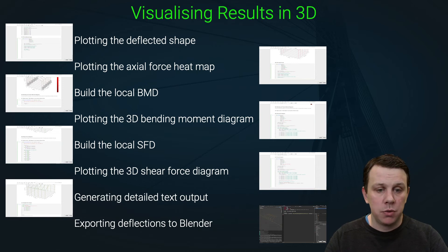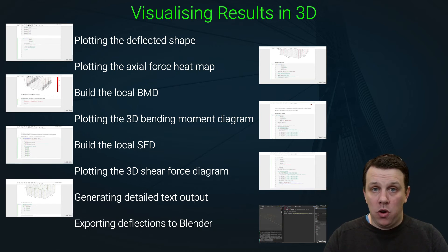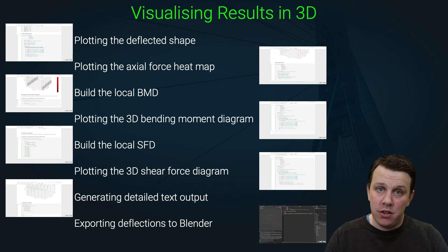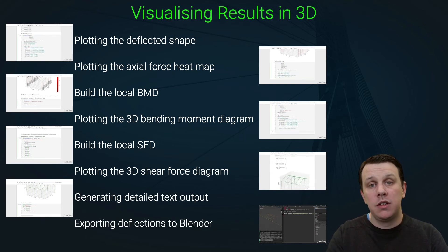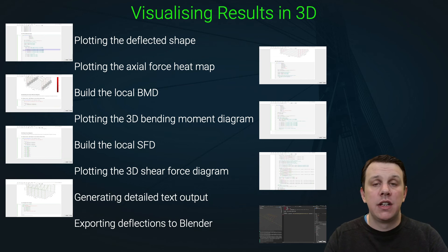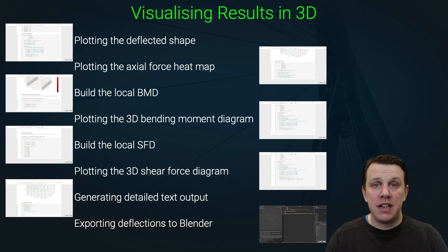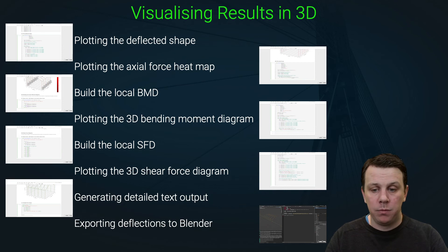We'll also write some code to export our model deflections to a CSV file, then jump over to Blender and write a script there that pulls those deflections in so we can visualize them on a geometrically accurate structural model — one that doesn't suffer from the distortions present in a Matplotlib plot.